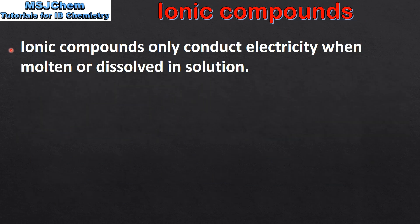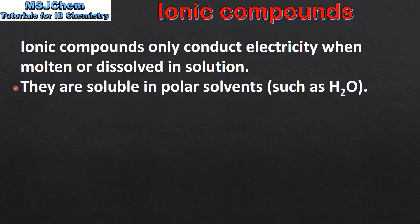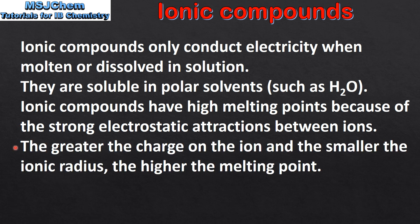To summarize: ionic compounds only conduct electricity when molten or dissolved in solution. They are soluble in polar solvents such as water. Ionic compounds have high melting points because of the strong electrostatic attractions between ions. The greater the charge on the ion and the smaller the ionic radius, the higher the melting point.